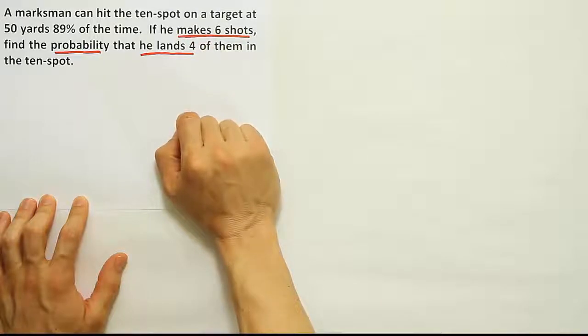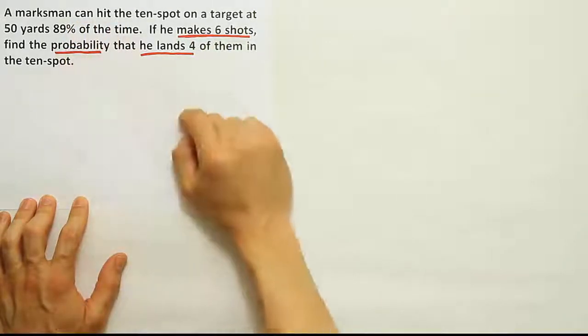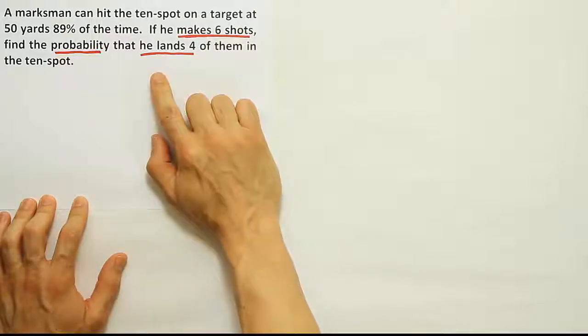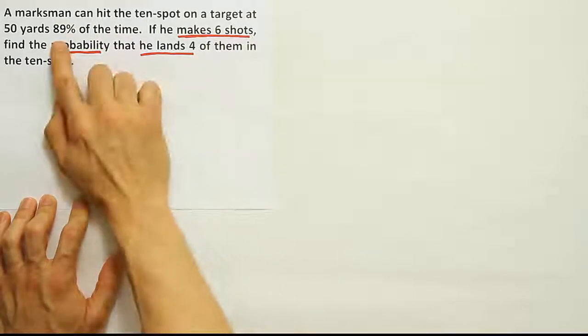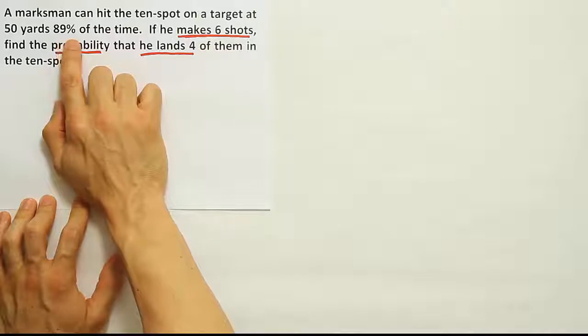There are only two possibilities for the outcome, either success or failure, right? Success if he hits the 10 spot, failure if he misses it. Then we have a constant probability of success. He makes it 89% of the time.